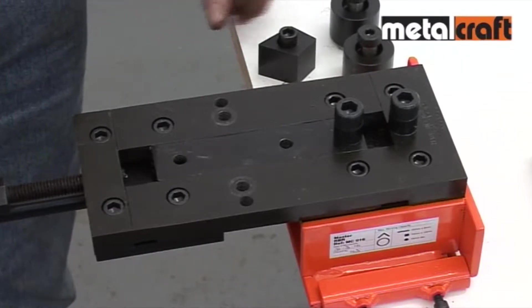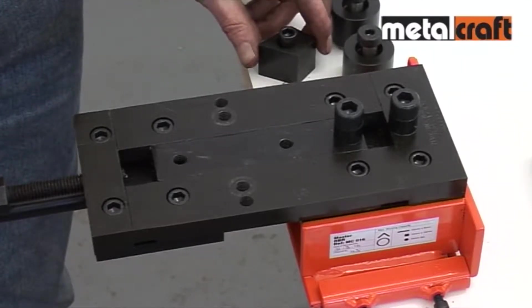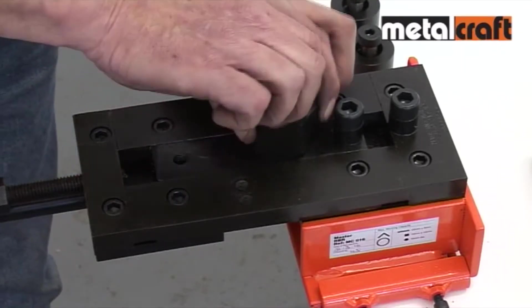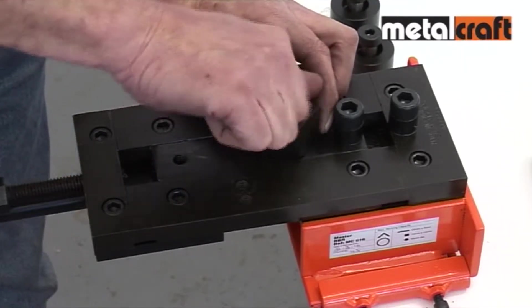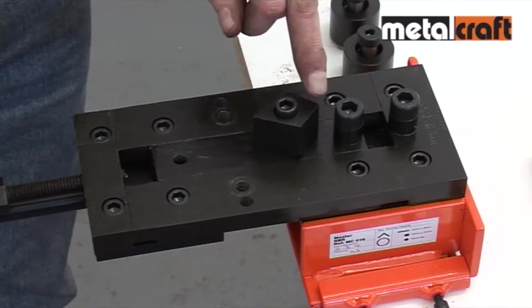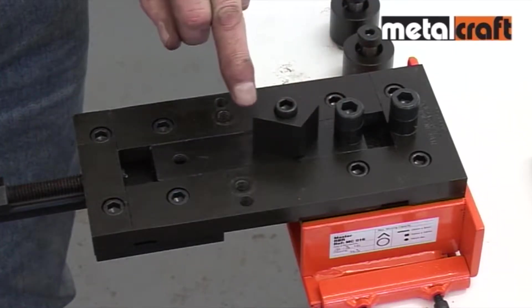We're going to start by showing you how to set up the tool to carry out the bending function. Firstly, the diamond shaped bending head is fitted to the centre slide. As you can see, it has two positions, one for bending 90 degree angles and the other for smaller angles, up to 60 degrees.